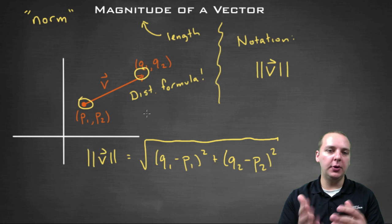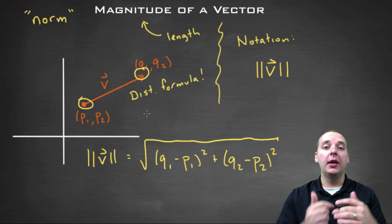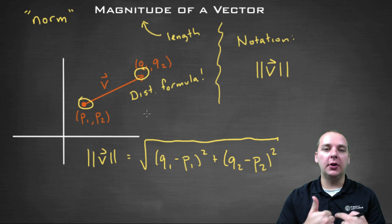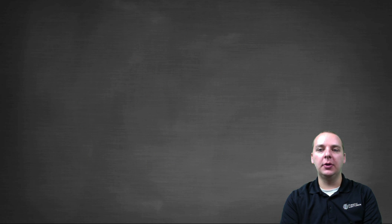So you're just taking your initial point and your terminal point and doing the distance formula. Now, often times our vectors are written in component form, so this formula here actually becomes even a little bit simpler than that. Let me show you what I'm talking about.